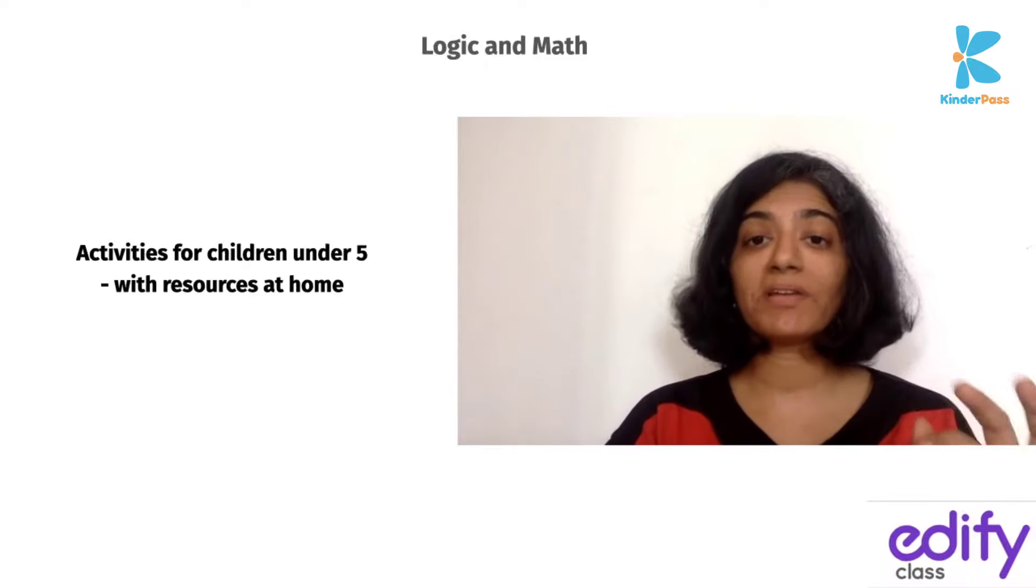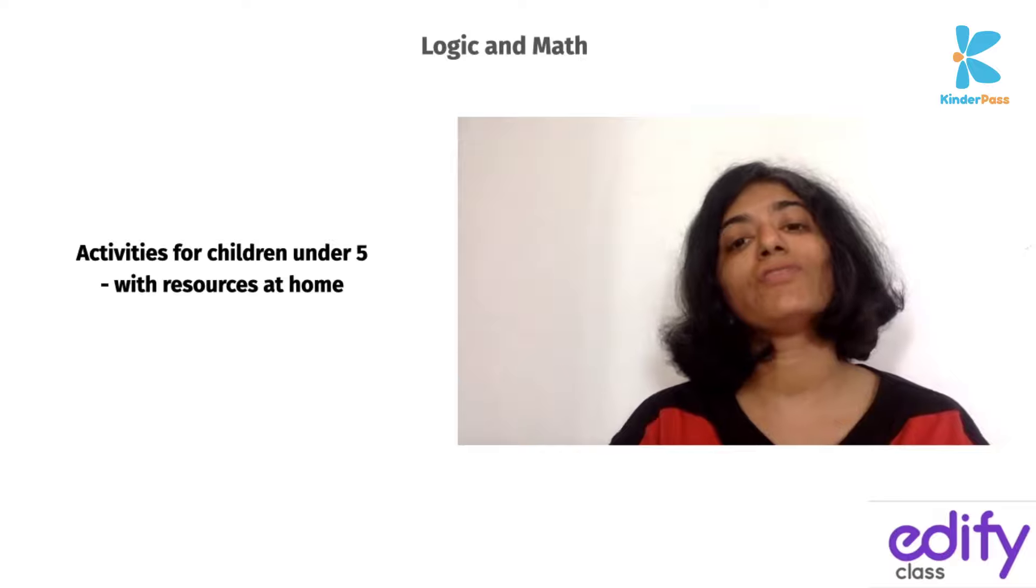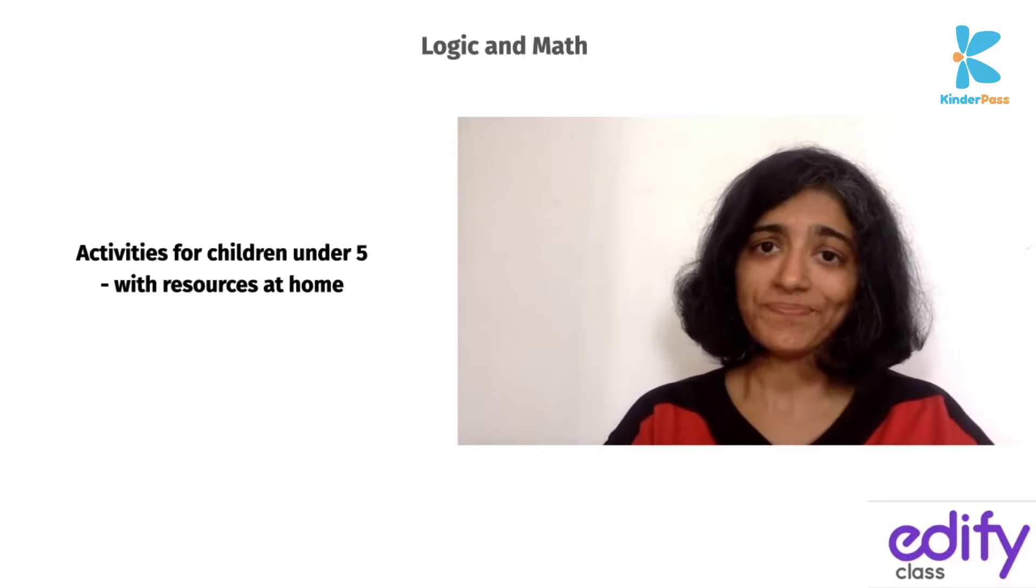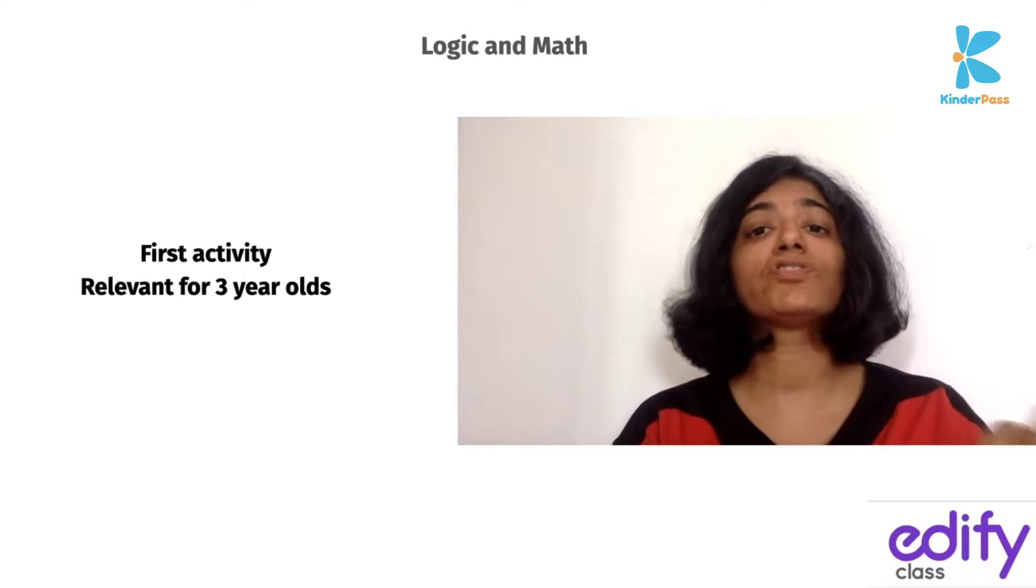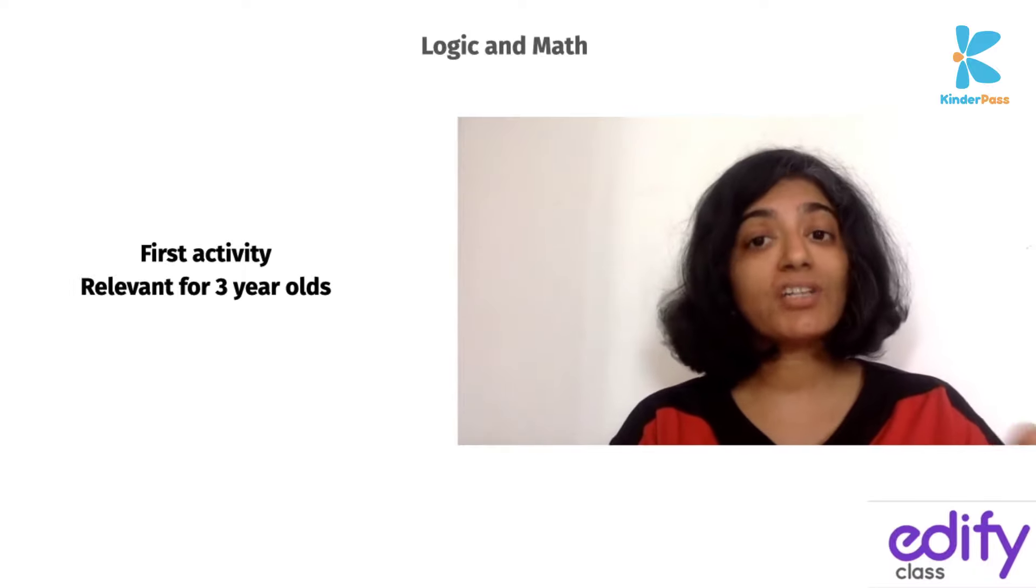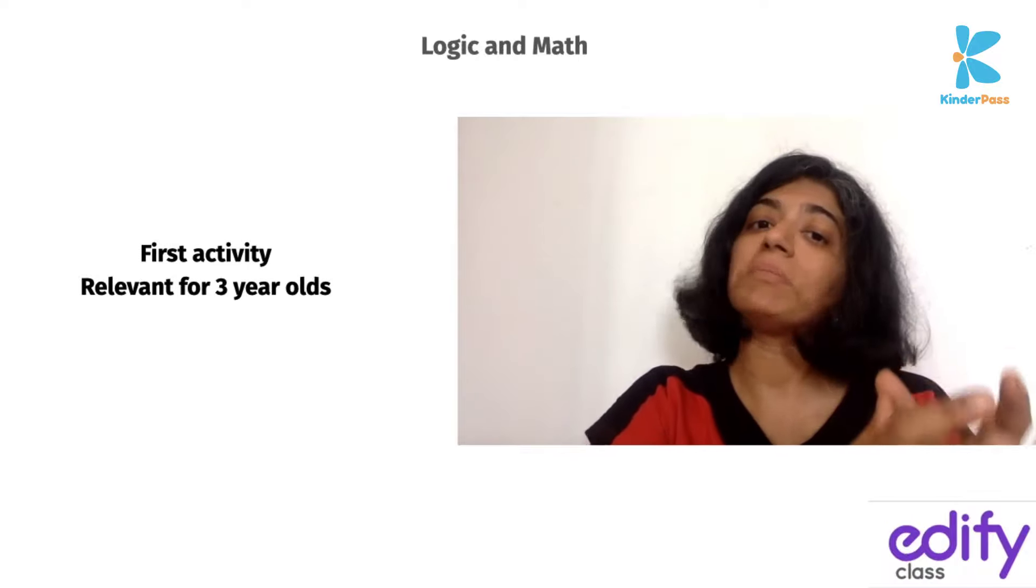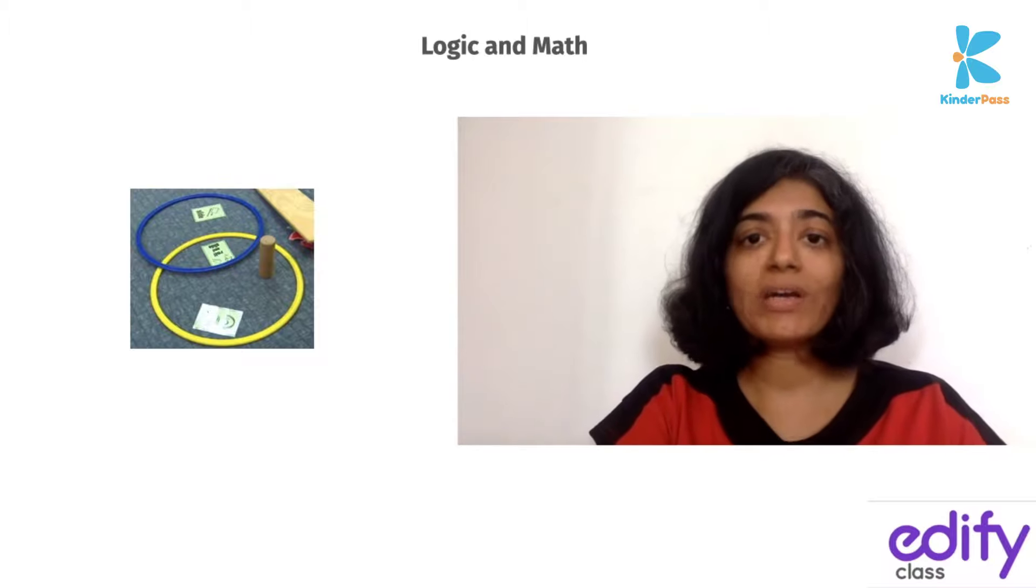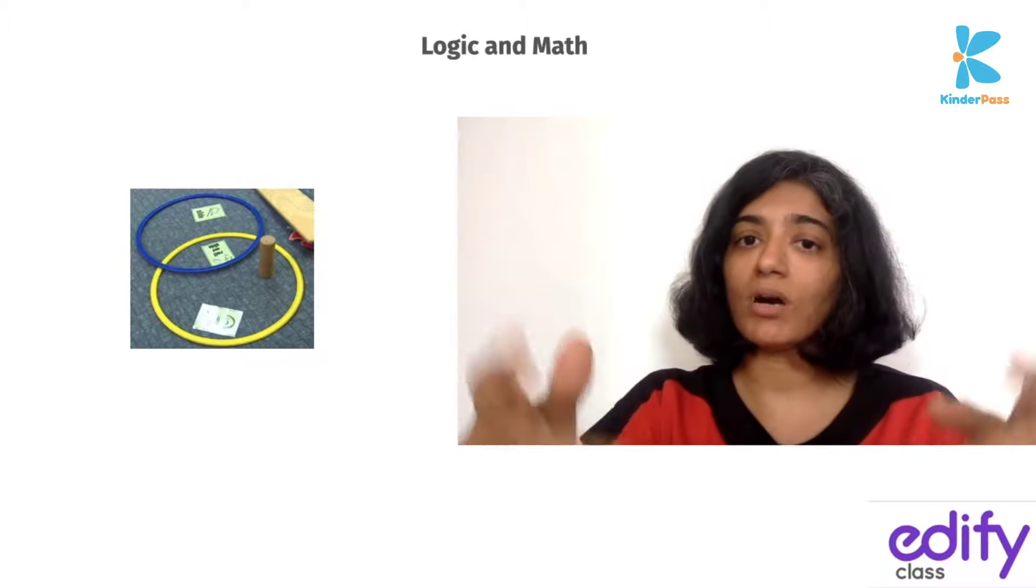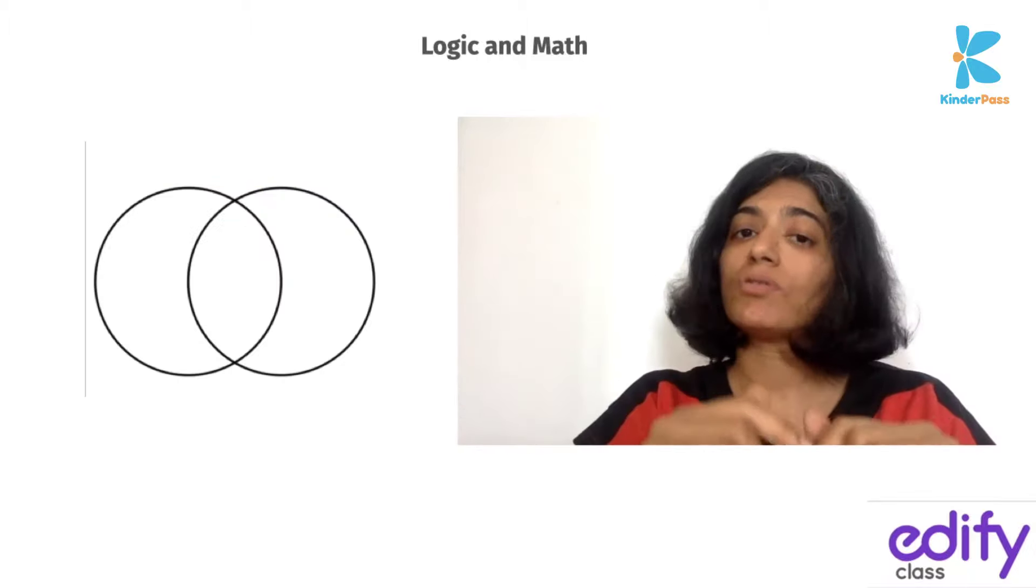So what kind of activities can you do, especially during the lockdown period with the limited resources that you have? Here are a list of three or four activities that can work very beautifully for children under the age of five. The first one that you could do is something that works very comfortably for children who are around three years of age. Younger children can also attempt it as long as they can hold objects firmly in their hand and work with them.